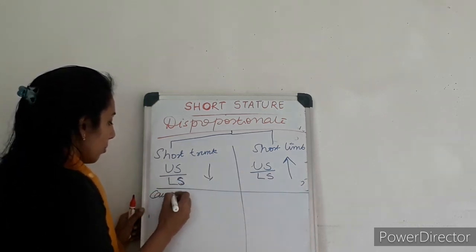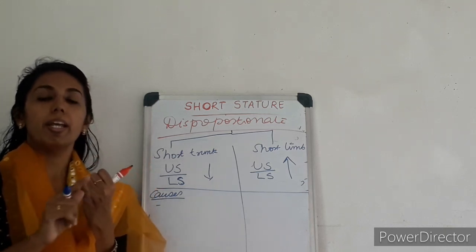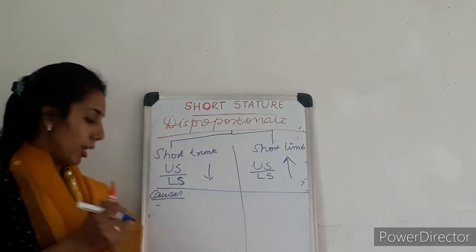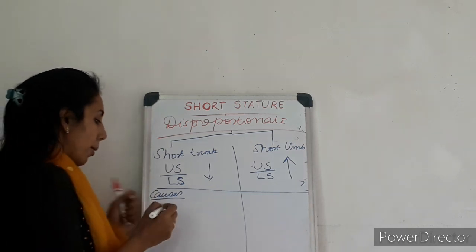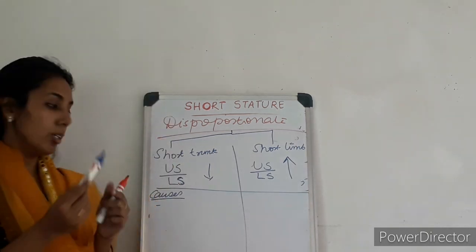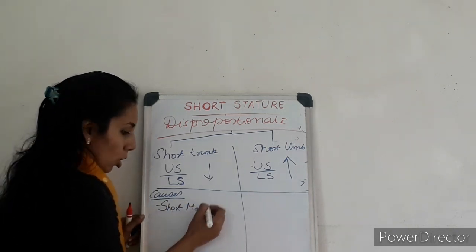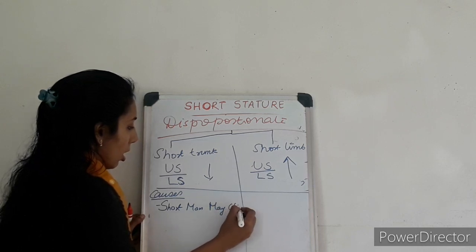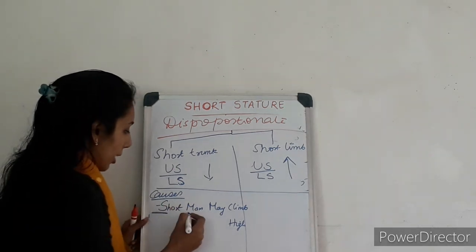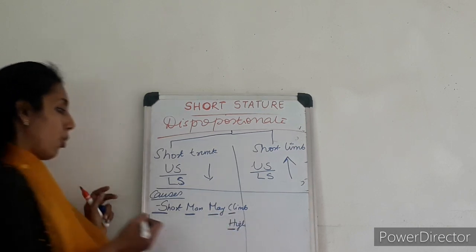Causes of short trunk dwarfism — we have so many causes because the trunk is short: caries spine, mucopolysaccharidosis, mucolipidosis, spondyloepiphyseal dysplasia, and hemivertebrae. There is a mnemonic for that: short man. S for spondylism/spondyloepiphyseal dysplasia, M for mucopolysaccharidosis, M for mucolipidosis, C for caries spine, and H for hemivertebrae.